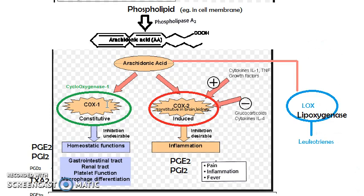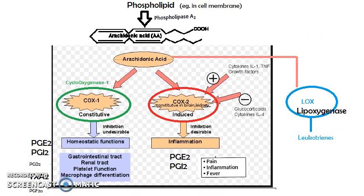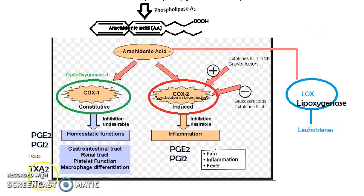COX-1 is mainly physiological — it is constitutive in many tissues and helps in homeostatic functions by producing prostaglandins like PGE2, PGI2, PGD2, thromboxane A2, and PGF2 alpha. These maintain the gastrointestinal tract, the renal tract, and the blood vessels.